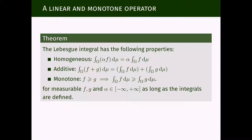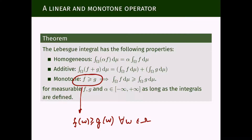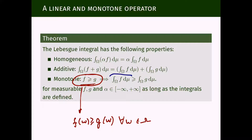The second-to-last fundamental property of the Lebesgue integral defined for extended Borel functions is: if two functions are comparable, f larger than g — meaning f of omega is larger than g of omega for every omega — and if the integral of g is not minus infinity, then the integral of f is defined and at least as large as the integral of g. On the other hand, if the integral of f is not plus infinity, then the integral of g is not plus infinity either, and it is bounded from above by the integral of f.